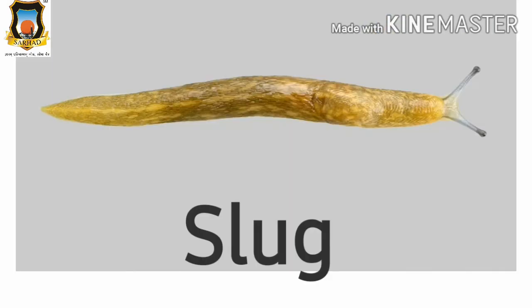The next rainy creature is slug. Slug is a rainy creature. Slug is like a snail, but slug does not have a shell on its body. Slug is a small creature. Slug also walks very slowly and also eats small insects. Slug is a rainy creature.